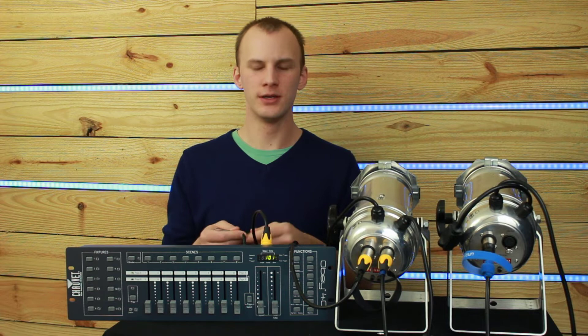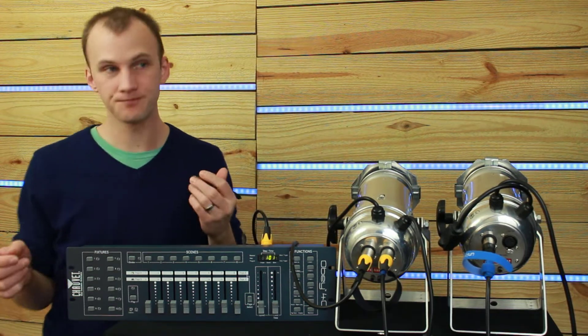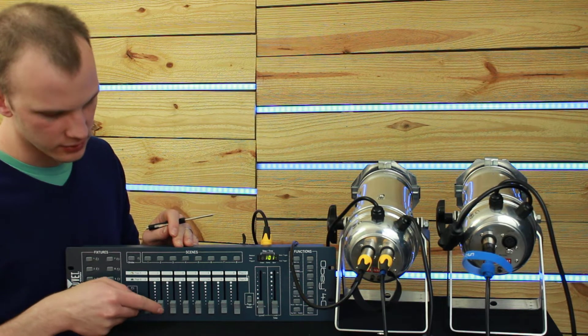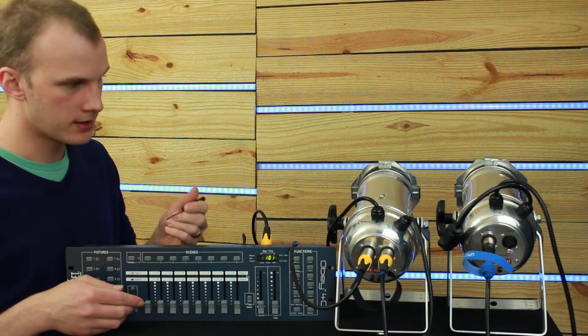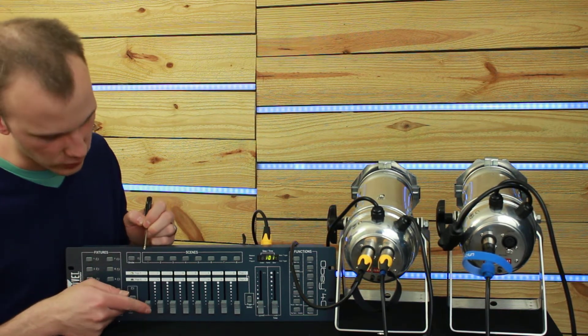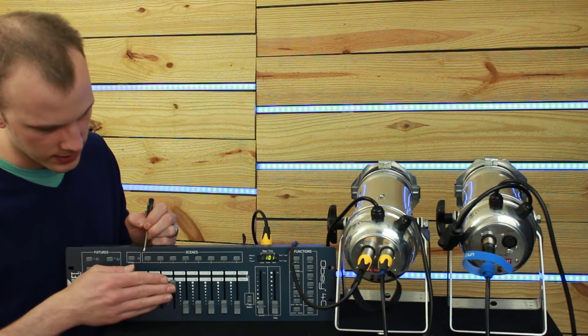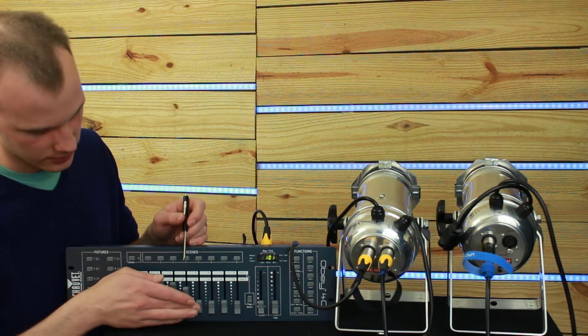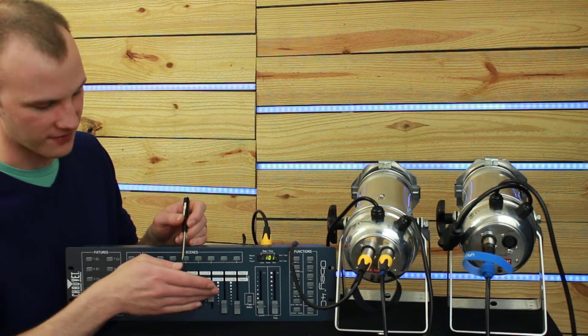Now with these fixtures, I'm using this basic console here. And it's a 3-channel fixture, because there's red, green, and blue LEDs. So my first fixture is going to be at 1. It'll use red, green, and blue. And my second fixture will be at 4. Red, green, and blue. And it will take up 4, 5, and 6.